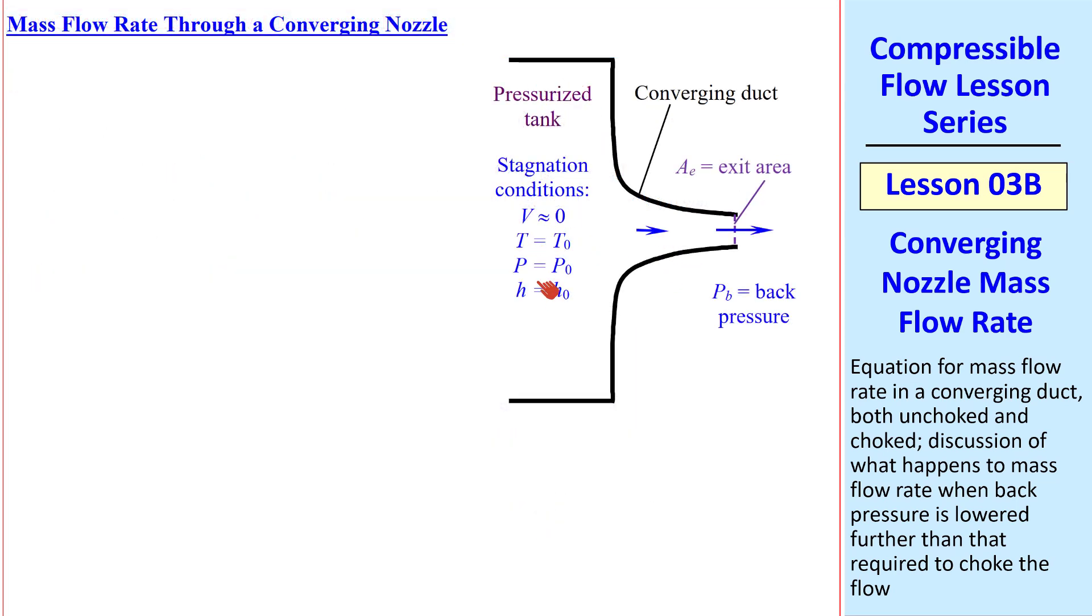We'll start with this familiar sketch, where we have stagnation conditions in a large tank, a converging nozzle, and some back pressure out here. All of these are considered to be constant, and A_E is the exit area.